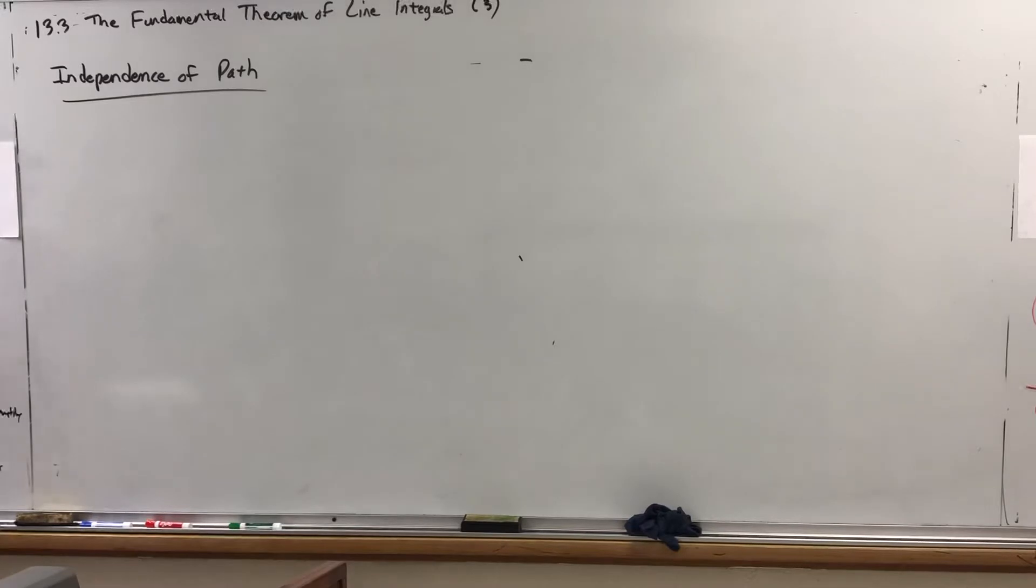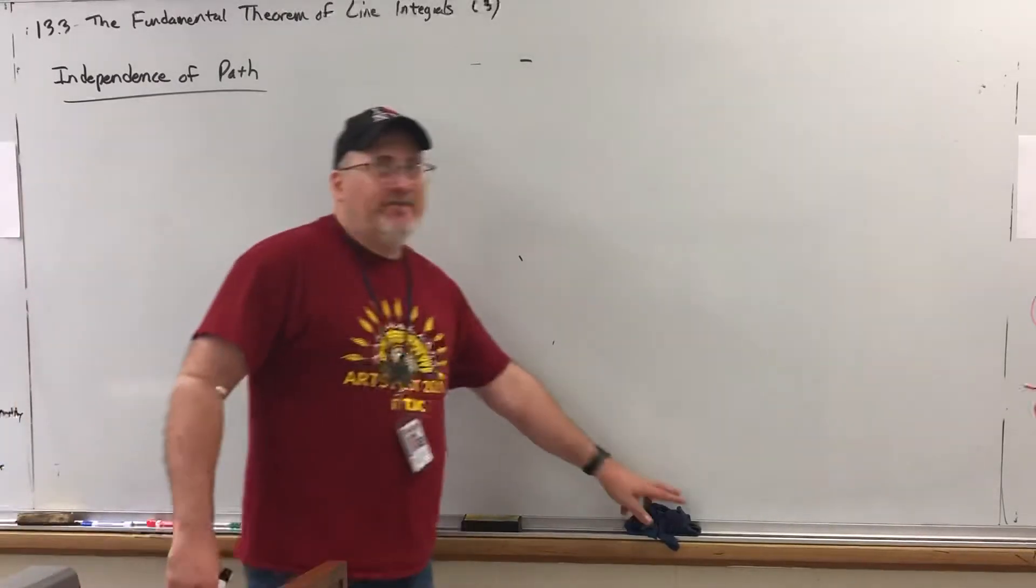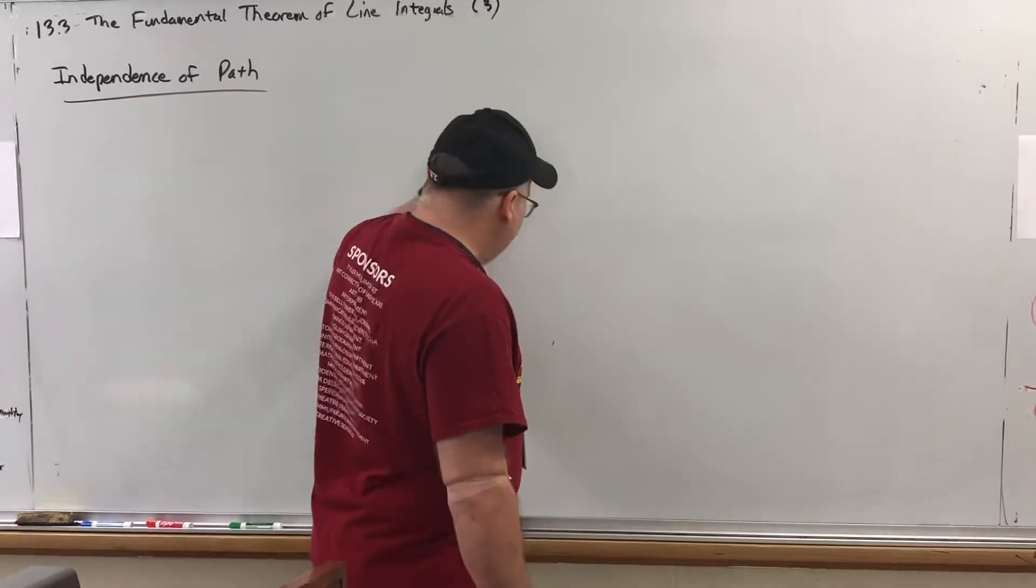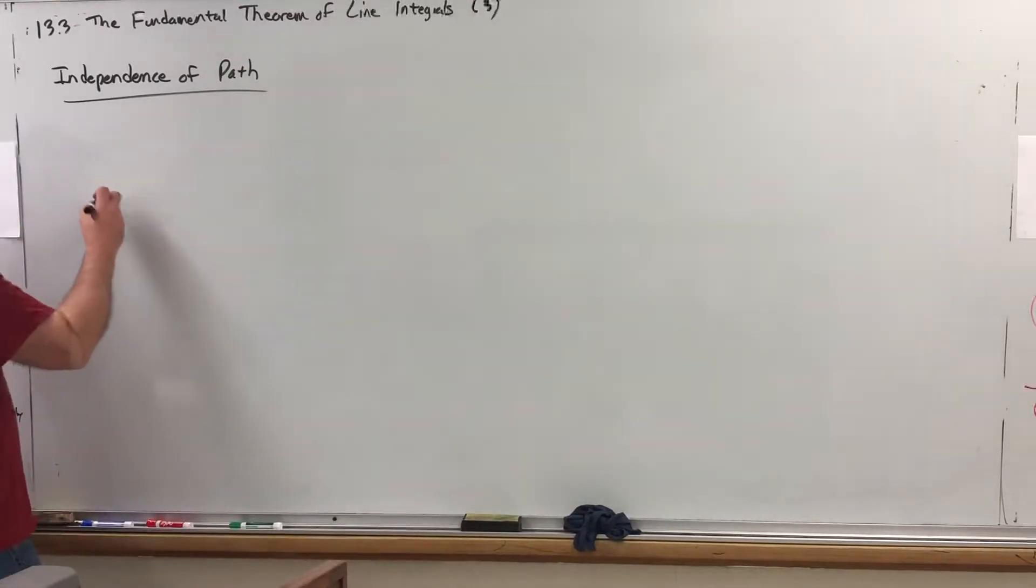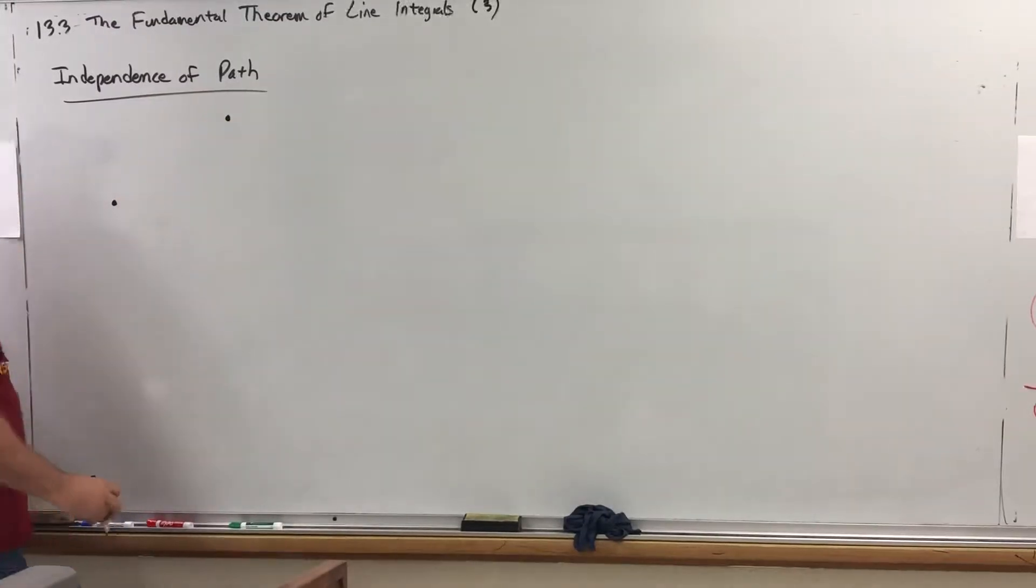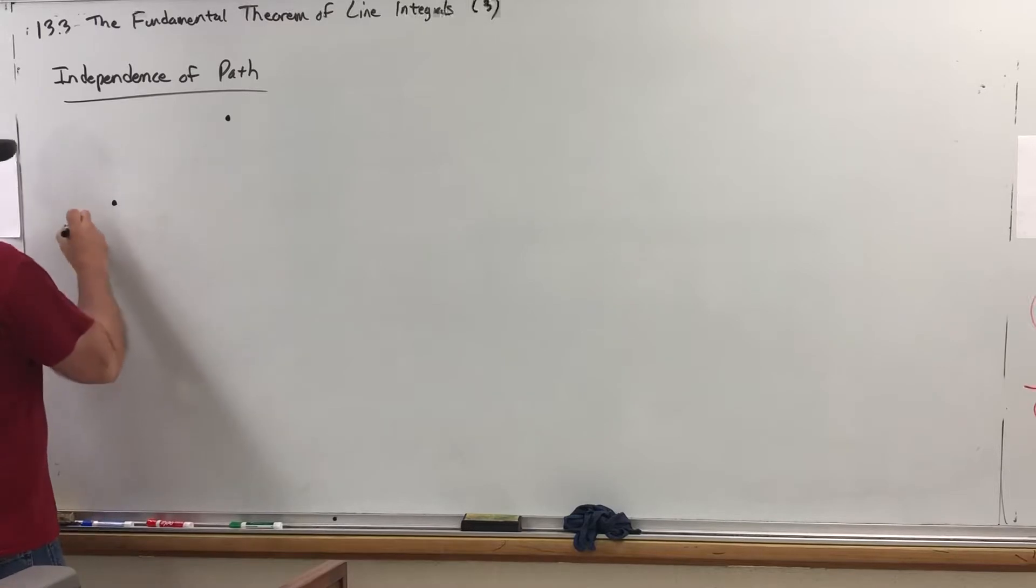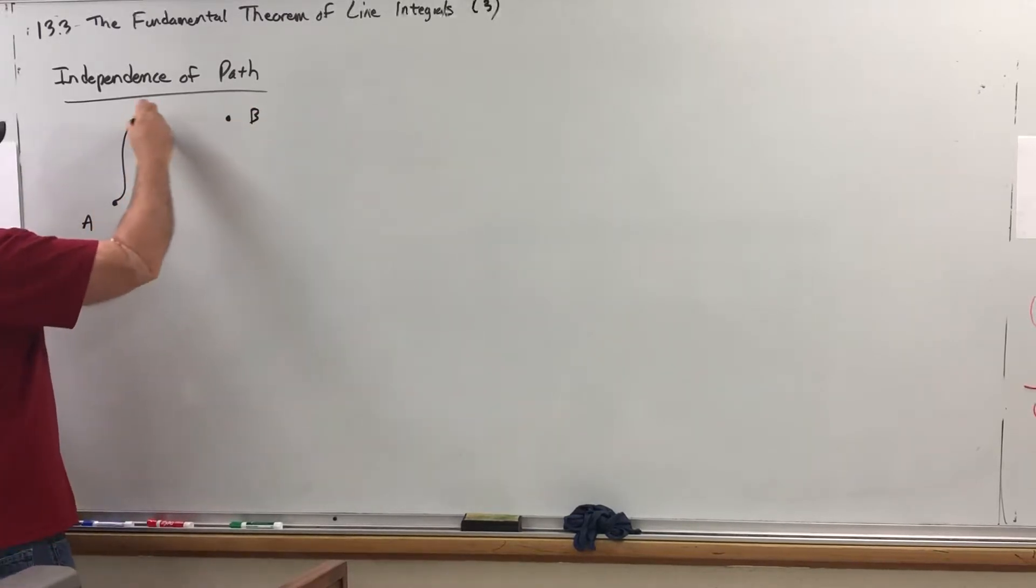What do I mean by independence of path? Well, it's exactly what its name implies, that whatever we're doing is independent of the path that we take. So, for example, let's say that we have two paths that go from point A to point B. We'll say the first path is C1, and the second path is C2.